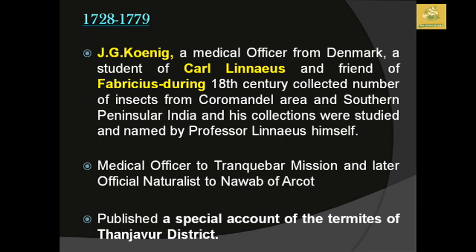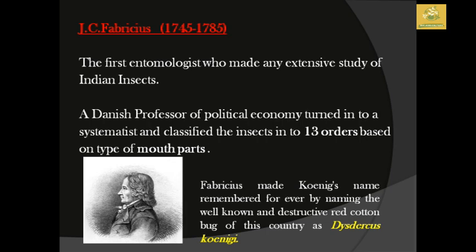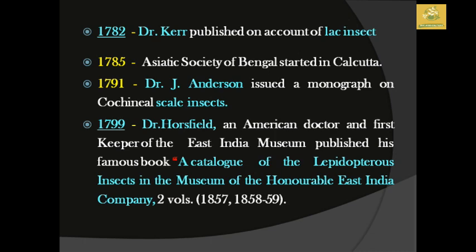Koenig also published a special account of the termites in the Tanjore district. His friend J.C. Fabricius, who lived from 1745 to 1785, was the first entomologist to make an extensive study of Indian insects. Fabricius was a Danish professor of political science who turned into a systematist and classified insects into 13 orders based on their mouthparts. Fabricius made Koenig's name memorable by naming the well-known destructive red cotton bug as Dysdercus cingulatus koenigi in his honor.